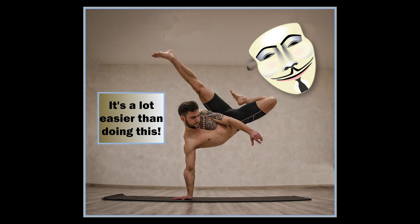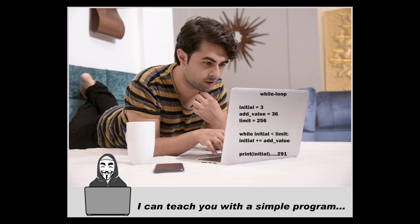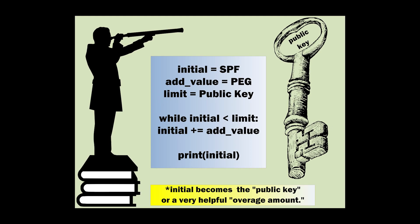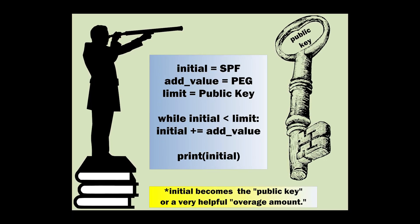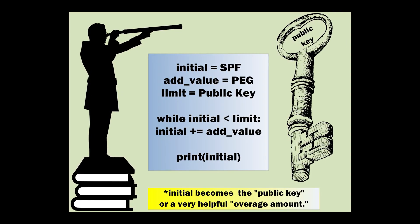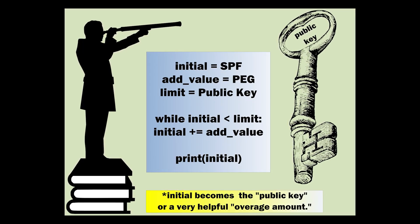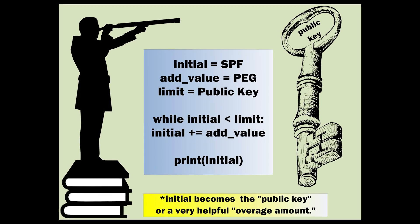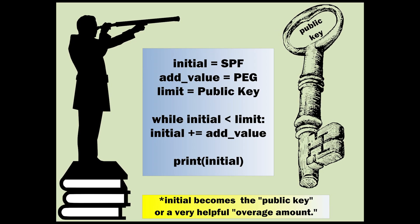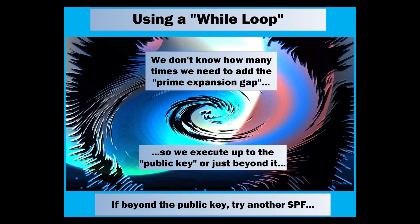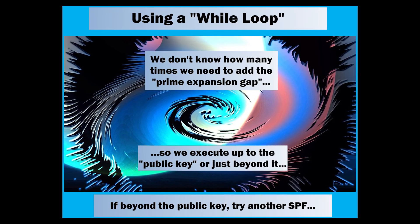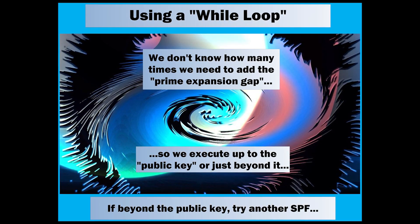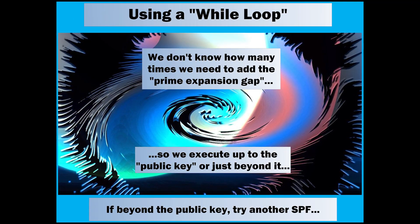It's a lot easier than doing this. Look, honey, I can teach you with a simple program. Small children can understand the concept. You start with an initial value, a potential smaller prime factor. You calculate the prime expansion gap, your add value. The limit is the public key. You use a while loop until you reach or exceed the public key. When using a while loop, we don't know how many times we need to add the prime expansion gap. So we execute up to the public key or just beyond it. If our result goes beyond the public key, we try another potential smaller prime factor.